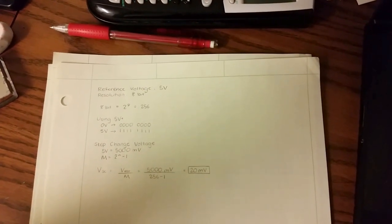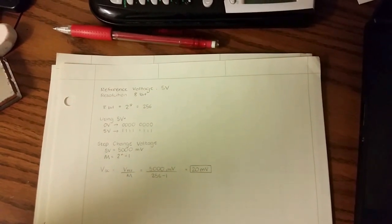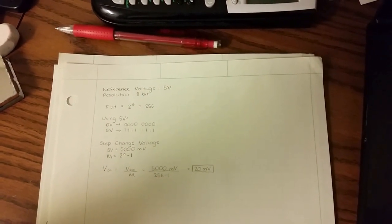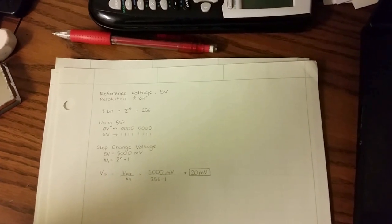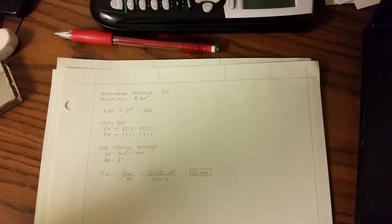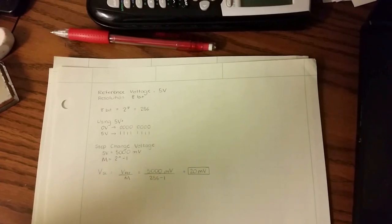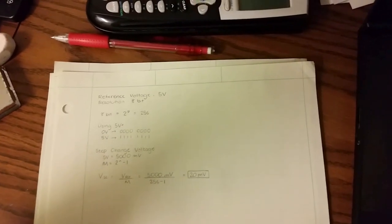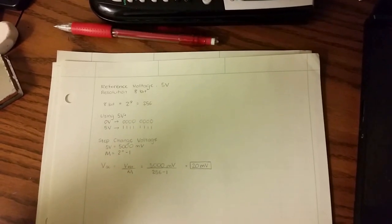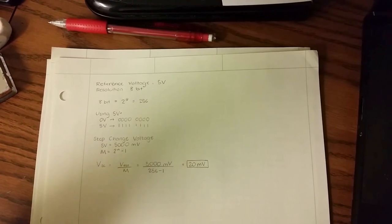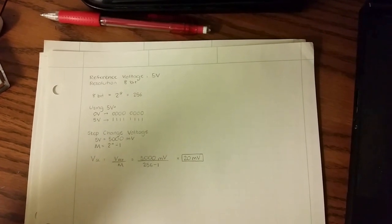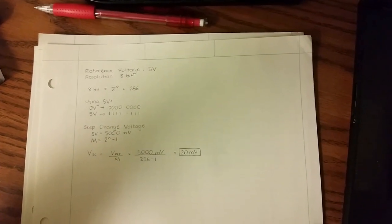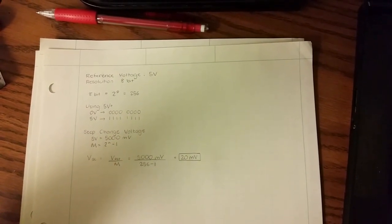So these are my calculations for the step voltage changes or step change voltage. I started with a reference voltage of 5 volts and the resolution is required to be 8 bits. So you know 8 bits is 256 steps and then those are the binary values or the binary outputs for the voltages and there's a formula that I used and there's the voltage that I got for my step change.